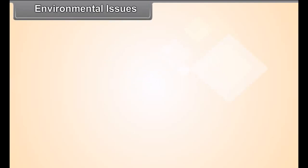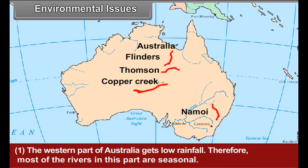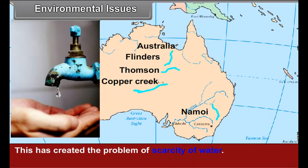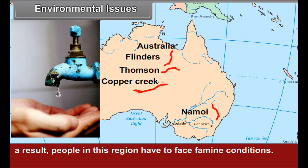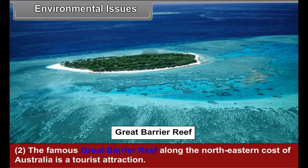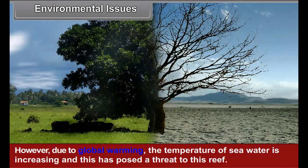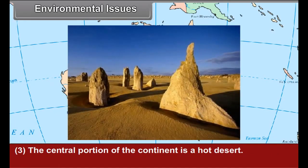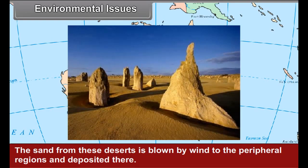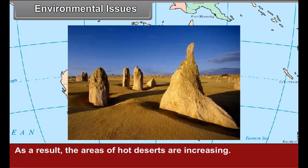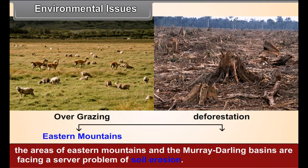Environmental issues: The western part of Australia gets low rainfall, therefore most of the rivers in this part are seasonal. This has created a problem of water scarcity, and people in this region have to face famine conditions. The Great Barrier Reef along the northeastern coast is a tourist attraction; however, due to global warming, rising sea temperatures have posed a threat to this reef. The central portion is a hot desert — sand blown by wind to peripheral regions is increasing the area of hot deserts. Due to overgrazing and deforestation, the eastern mountains and Murray-Darling basins are facing severe soil erosion.